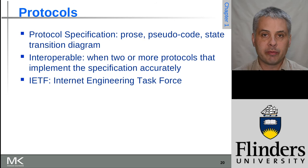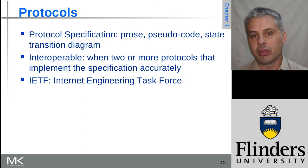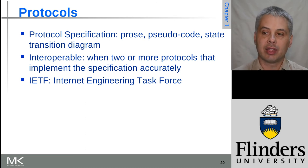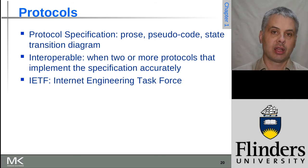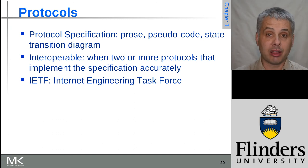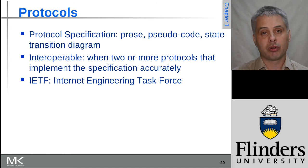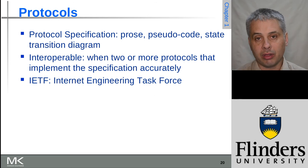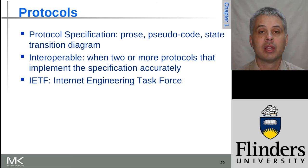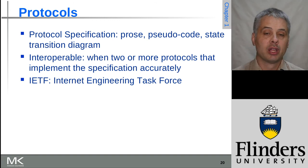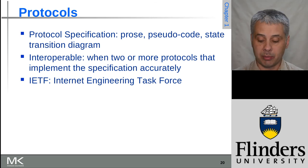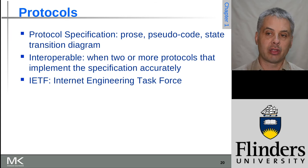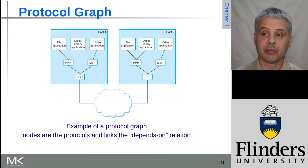There are a number of bodies that define these protocols. The main one for the internet is the Internet Engineering Task Force, the IETF. Anyone can propose a new internet standard, which then goes through the IETF standardization process to be tested and accepted, after which it becomes a standard internet protocol. They use very specific description languages for these protocols so that they can be implemented reliably on different systems in a way that will interoperate with each other.